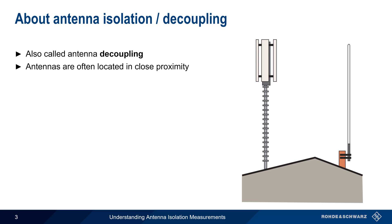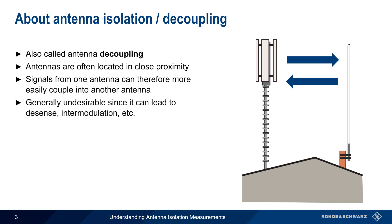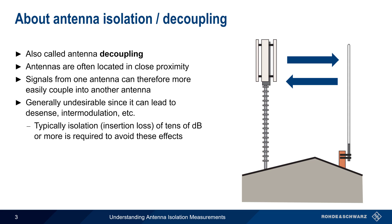In either case, when antennas are close to each other, signals transmitted from one antenna can easily be coupled into other nearby antennas. This is usually undesirable, because strong RF signals can create problems such as desensitization, intermodulation, etc. To avoid these issues, a certain amount of isolation — also referred to as insertion loss, or sometimes as path loss — should be present between the two antennas, and loss on the order of tens of dB is sufficient in most applications.